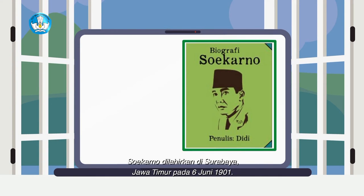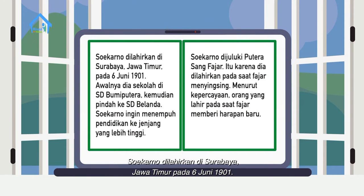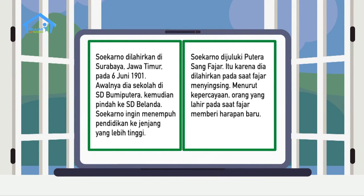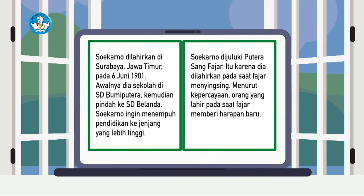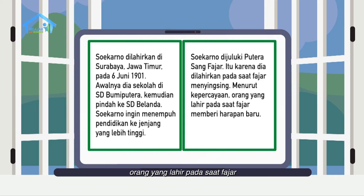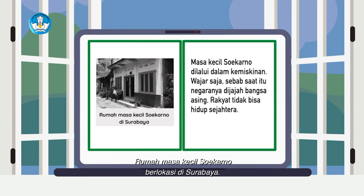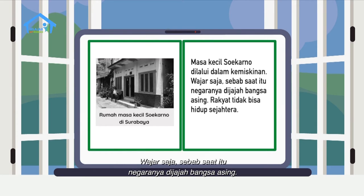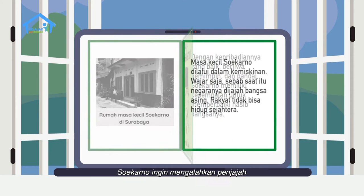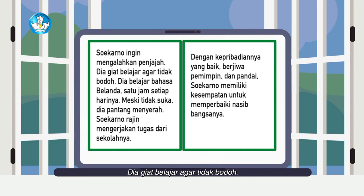Biografi Soekarno. Soekarno dilahirkan di Surabaya, Jawa Timur pada 6 Juni 1901. Awalnya, dia sekolah di SD Bumi Putra, kemudian pindah ke SD Belanda. Soekarno ingin menempuh pendidikan ke jenjang yang lebih tinggi. Soekarno dijuluki Putra Sang Fajar karena dia dilahirkan pada saat fajar menyingsing. Menurut kepercayaan, orang yang lahir pada saat fajar memberi harapan baru. Rumah masa kecil Soekarno berlokasi di Surabaya.